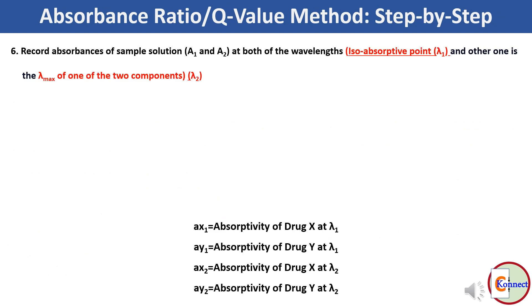Now record the absorbances, say A1 and A2 of the sample solution, at both of the wavelengths: isoabsorptive point lambda 1, and the other one, the lambda max of one of the two components, lambda 2.